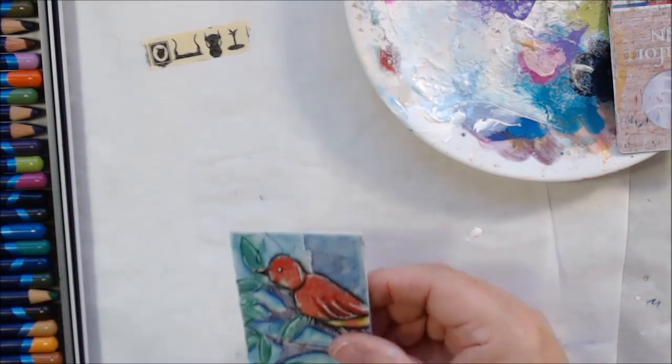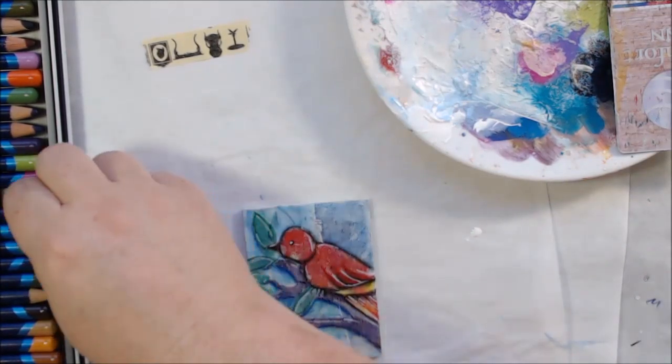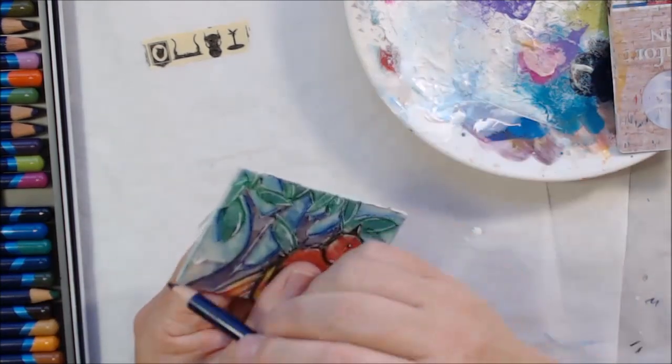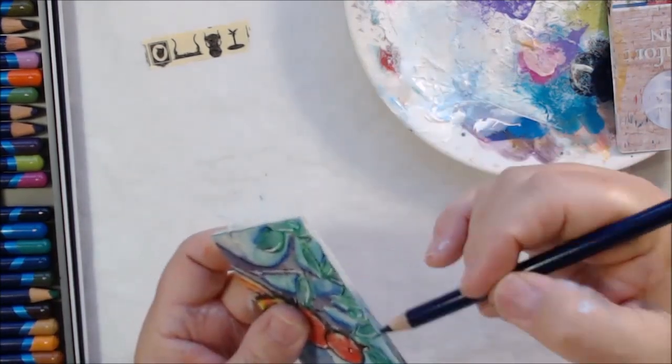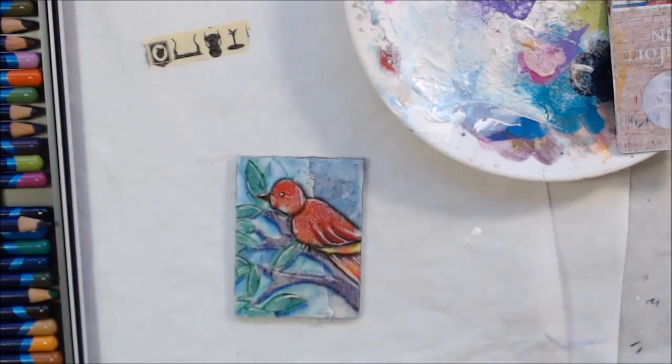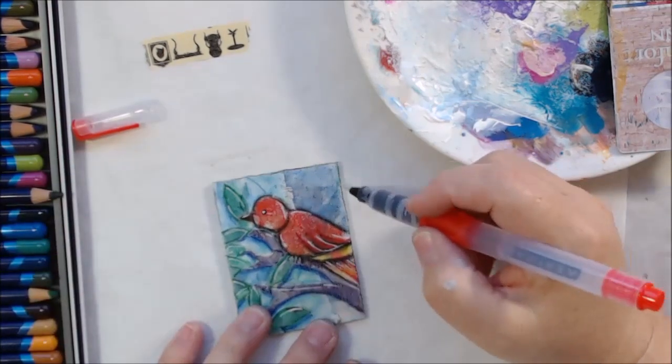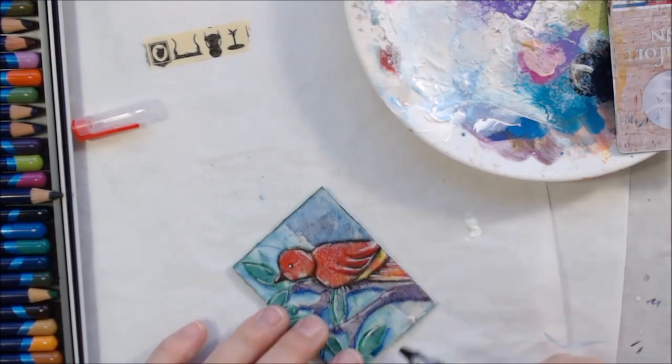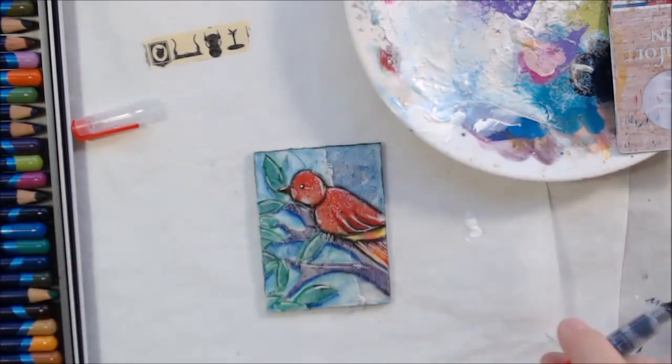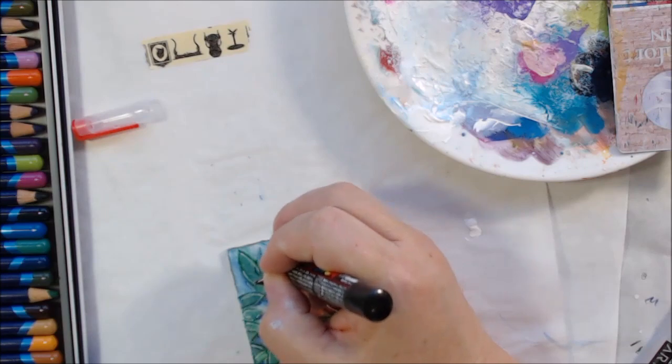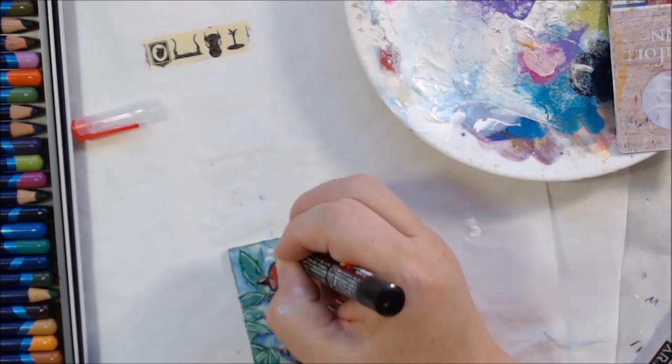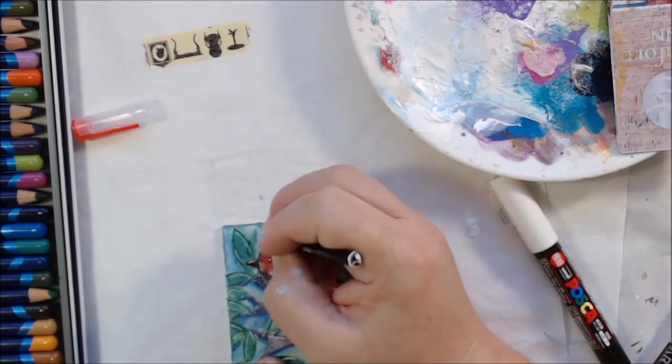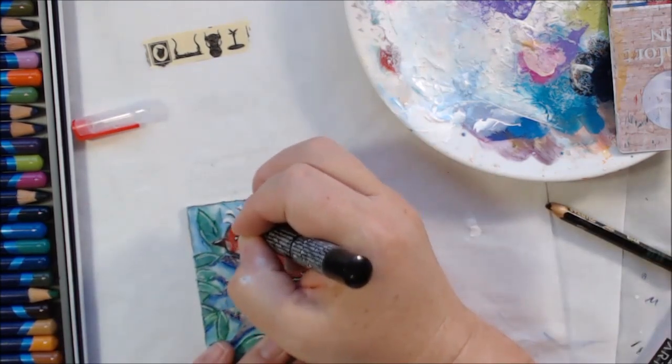Then I added some white highlights using the white Posca pen and going around the edge to make a little bit of a border with a dark Inktense pencil, which turned out to be green. I thought it was black, who knew, sometimes you can't tell. Then I decided the bird needs a little bit of a plume or something on his head, so I drew that in with my acrylic Posca pen, which is an acrylic pen.